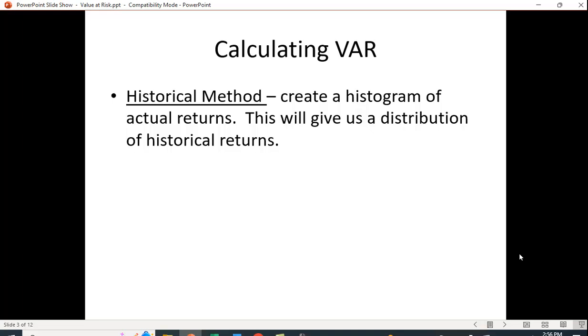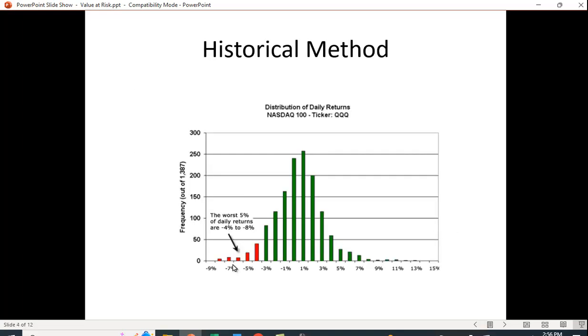How do we do these calculations? One is we can use the historical method. We can create a histogram of actual returns, and this gives us a distribution. So we get a distribution that looks something like this, and we're looking at what's the worst that can happen? This is the worst 5%, so this is the lower bound here.